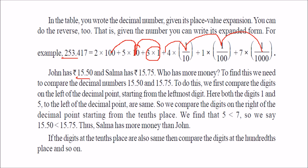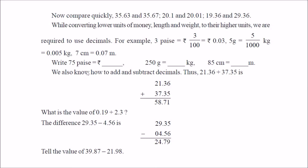John has 15.50 and Salma has 15.75. How do we find out which is greater? We start from the left: 1 equals 1, 5 equals 5. Then we go to the values on the right-hand side of the decimal: 5 versus 7 — 7 is greater, so 15.75 is greater. Another example: comparing 1-something versus 2-something — since 1 is less than 2, the second number is greater. For equal whole parts, we compare decimals: 1 is greater than 0, so that number is greater.